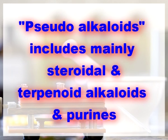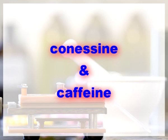The pseudoalkaloids: this term includes mainly steroidal and terpenoid alkaloids and purines. They are not derived from amino acids. They do not show many of the typical characters of an alkaloid, but give the standard qualitative test for alkaloids. Examples of pseudoalkaloids are coniine and caffeine.